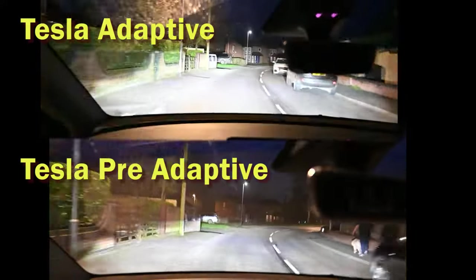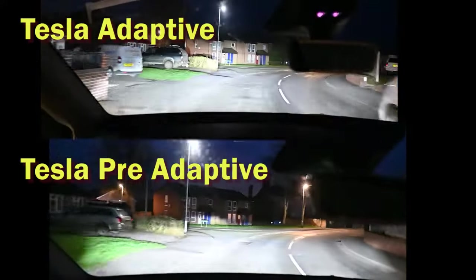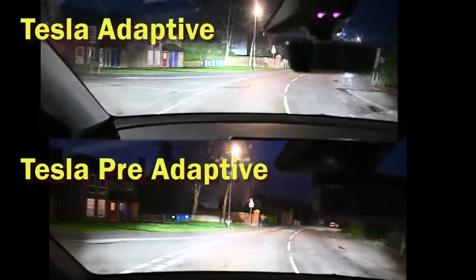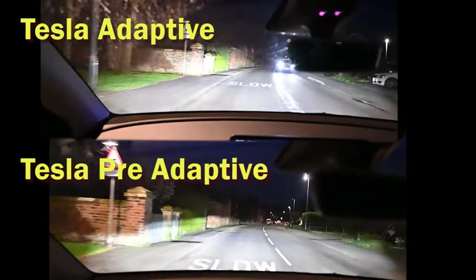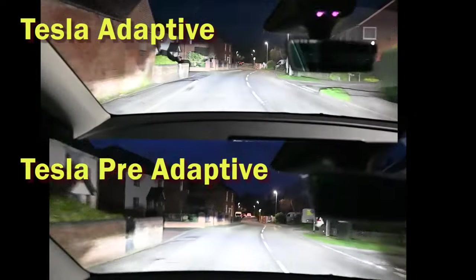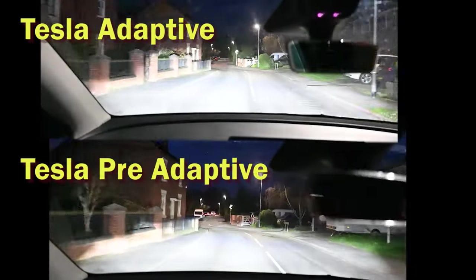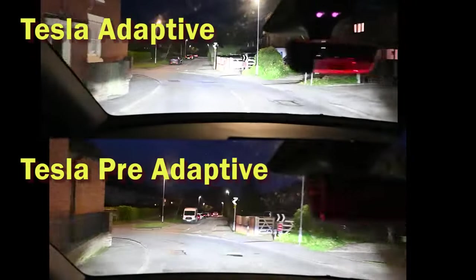We come around this corner, we'll see at the top that the adaptive headlights actually meet an oncoming car and they actually do dip. We can see the left-hand side is still fairly well illuminated, but the right-hand side had actually dipped down to not dazzle the car coming towards us.